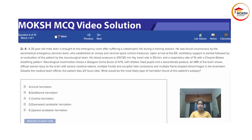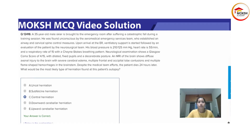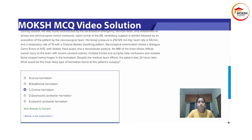What would be the most likely type of herniation found at this patient's autopsy? Questions like this are a USMLE favorite — they do ask about the sort of herniation in the brain. It's one of the favorite questions to ask.